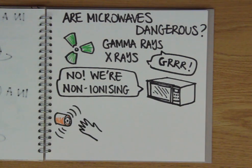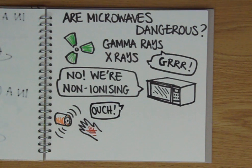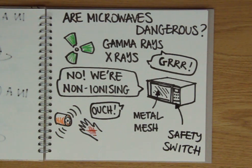But just as they heat up food, if you got too close, you could get burnt, which is why all microwaves have the metal mesh on the door to prevent the microwaves from escaping and a safety switch to shut off the microwave supply when the door is opened. Happy eating!